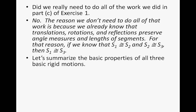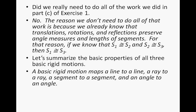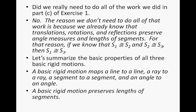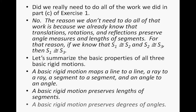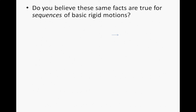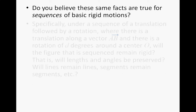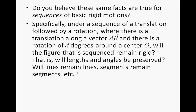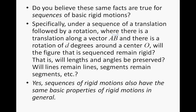Let's summarize the basic properties of all three basic rigid motions. A basic rigid motion maps a line to a line, a ray to a ray, a segment to a segment, and an angle to an angle. A basic rigid motion preserves lengths of segments, and a basic rigid motion preserves degrees of angles. These same facts are true for sequences of basic rigid motions — under a sequence of translation along vector AB followed by a rotation of D degrees around center O, lengths and angles are preserved, lines remain lines, and segments remain segments.